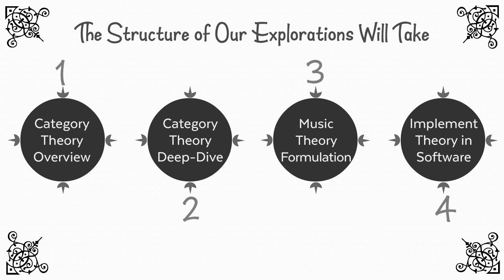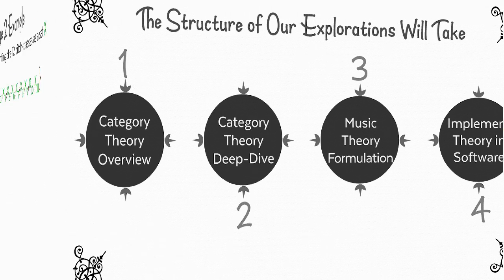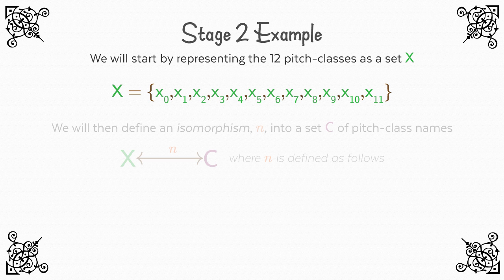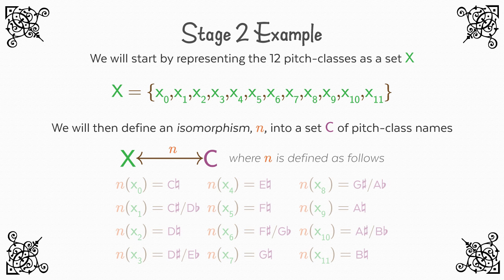Stage one, I will introduce a category of abstract sets and arbitrary mappings in a series of lessons. In stage two, we will start by representing the 12 pitch classes as a set X. We can then define an isomorphism N into a set C of pitch class names, and we will see how the finite inverse limits and co-limits of sets will allow us to represent some more useful musical concepts.